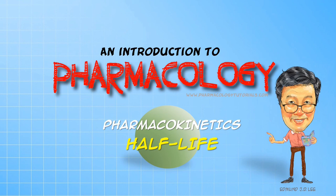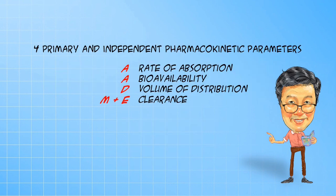We have talked about the ADME of pharmacokinetics in the previous videos. ADME is represented by what we call the four primary and independent pharmacokinetic parameters: rate of absorption, bioavailability, volume of distribution, and clearance.